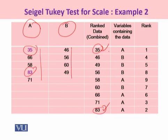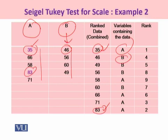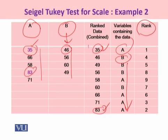For example, looking at the observation 35, it belongs to group A, so we write A. The next observation in sequence is 46, which is assigned B because it was lying under the B variable of interest. Once you are done with the assignment of the actual group membership for each observation, you then assign ranks to these observations arranged from smallest to largest.